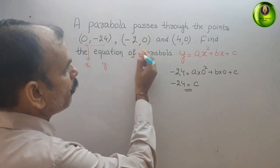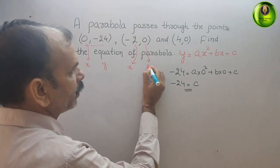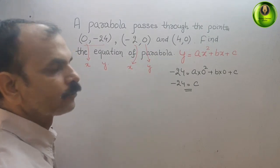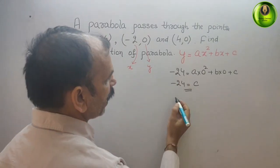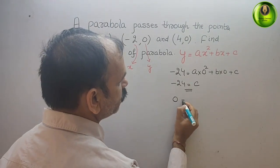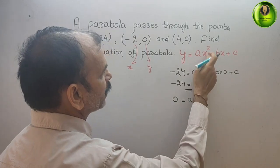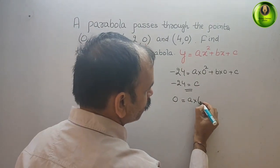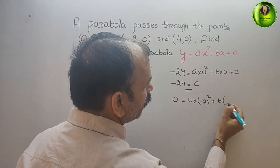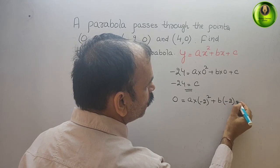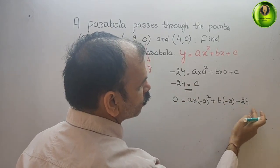Now for the second point: (-2, 0). Here -2 is your x and 0 is your y. Substituting, we get: 0 = a(-2)² + b(-2) + c, which is 0 = a(-2)² + b(-2) - 24.